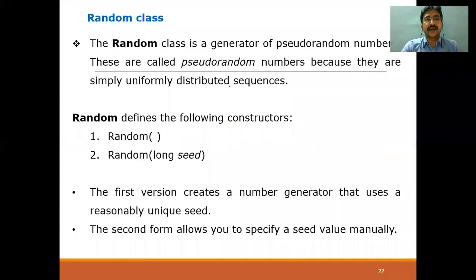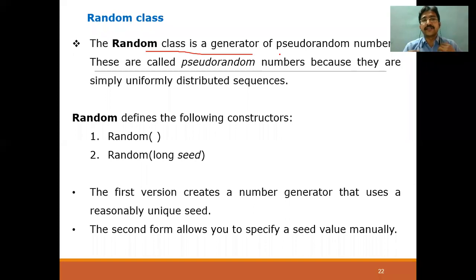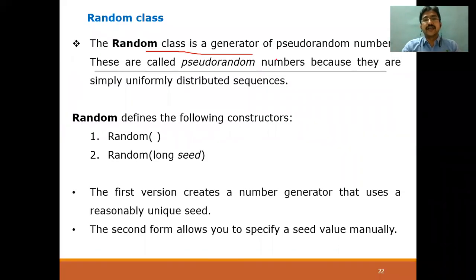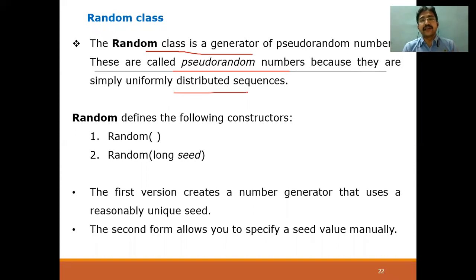Coming to the definition of the Random class: the Random class is a generator of pseudo-random numbers. Pseudo-random numbers are generated in a uniformly distributed sequence. The purpose of the Random class is the generation of these pseudo-random numbers, which are simply uniformly distributed sequences.